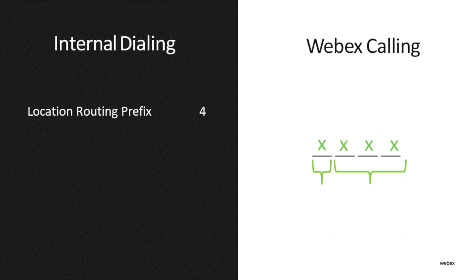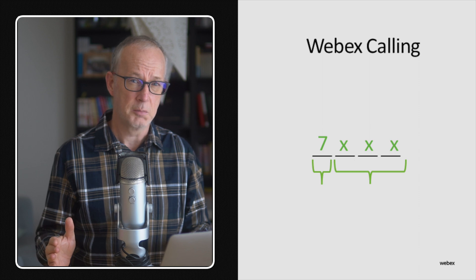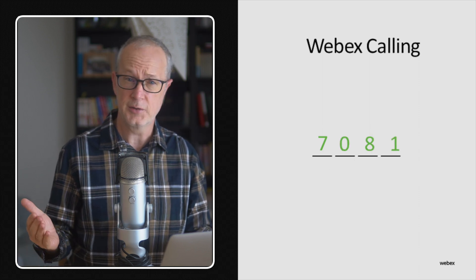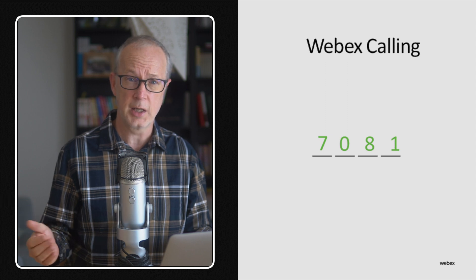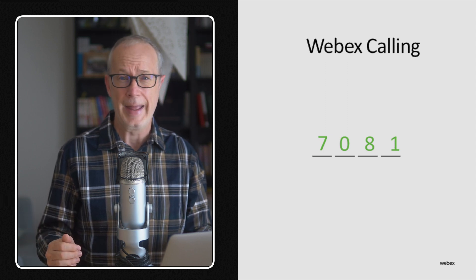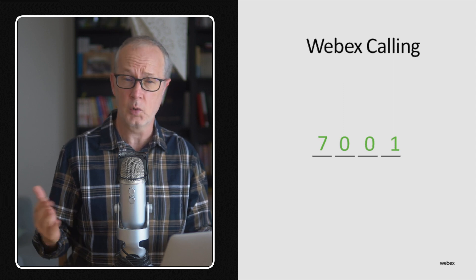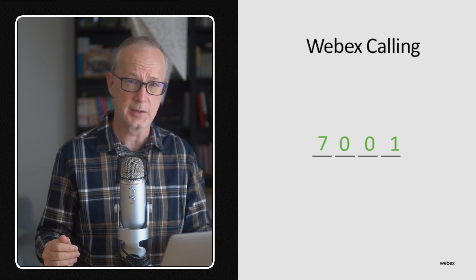For the steering digit, we're going to assign the number 7. You can think of this like dialing 9 to get an outside line, except that whenever we dial 7, it indicates we're dialing a different location but still within our organization. The second part, the location number, is going to be the country code. The country code for Japan is 081, so altogether the location prefix will be 7081. And the location prefix for the U.S. will be 7001, because the country code for the U.S. is 001.